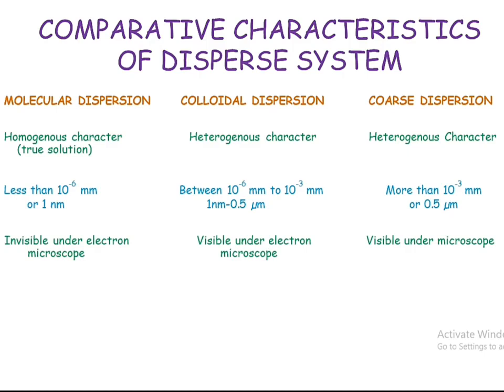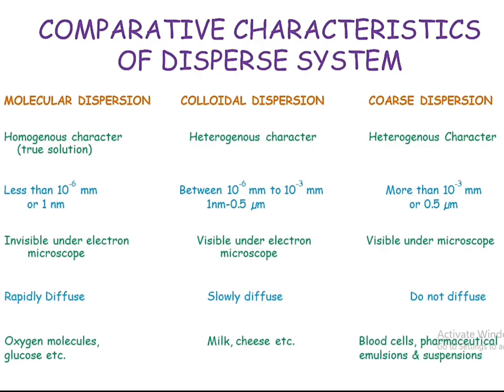Regarding visibility under a microscope: in molecular dispersion, the dispersed phase is invisible even under an electron microscope. In colloidal dispersion, an electron microscope can reveal the dispersed phase. In coarse dispersion, it can be easily visible under a regular microscope. Regarding diffusion rate, molecular dispersions are rapidly diffusible through a semipermeable membrane. Colloidal dispersions diffuse at a slower rate, while coarse dispersions do not diffuse at all.